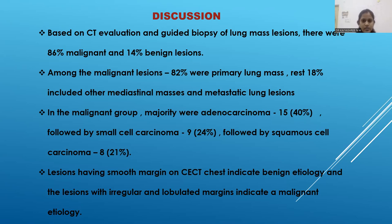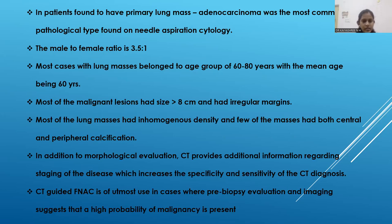Based on CT evaluation and guided biopsy, 86% were malignant and 14% were benign lesions. Among the malignant, 82% were primary lung masses and the remaining 18% included other mediastinal masses and metastatic lung lesions. In the malignant group, the majority were adenocarcinoma at 40% (15 cases), followed by small cell carcinoma at 24% (9 cases), and squamous cell carcinoma at 21% (8 cases). Lesions with smooth margins indicated benign etiology, while irregular and lobulated margins indicated malignancy. Adenocarcinoma was the most common pathological type on nodal biopsy. Male to female ratio was 3.5:1, and most cases belonged to the 60–80 year age group with a mean age of 60 years. Most malignant lesions had a size greater than 8 cm with irregular margins, inhomogeneous density, and some had both central and peripheral calcification.